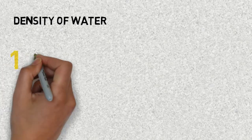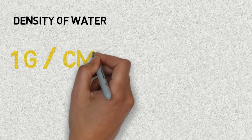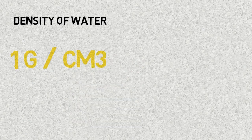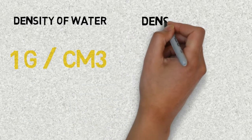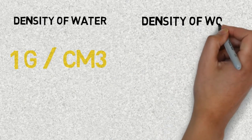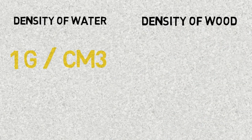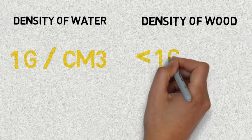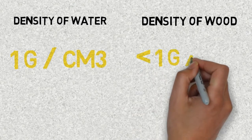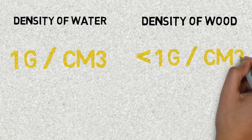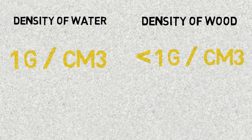Now let us see what is the density of water and what is the density of wood. The density of water is 1 gram per centimeter cube. When we talk about wood, there are different types of wood and the density varies, but almost all of them have their respective densities less than 1 gram per centimeter cube.